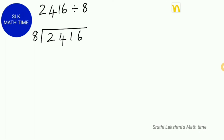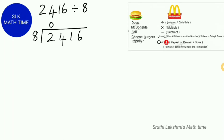Let's see another example: 2416 divided by 8. Here 8 is the divisor and 2416 is the dividend. How many 8s can fit in 2? Zero — so we write a 0, then multiply 8 times 0 which is 0. We subtract 2 minus 0, giving us 2. We check for another number and find 4, so we bring it down. Next, we see how many 8s are in 24: three 8s are in 24.